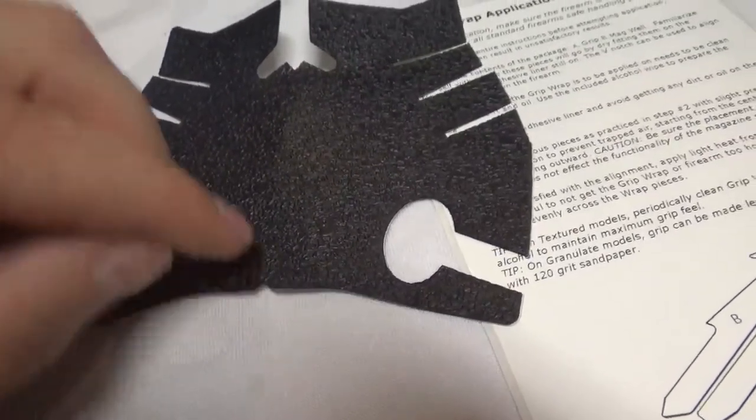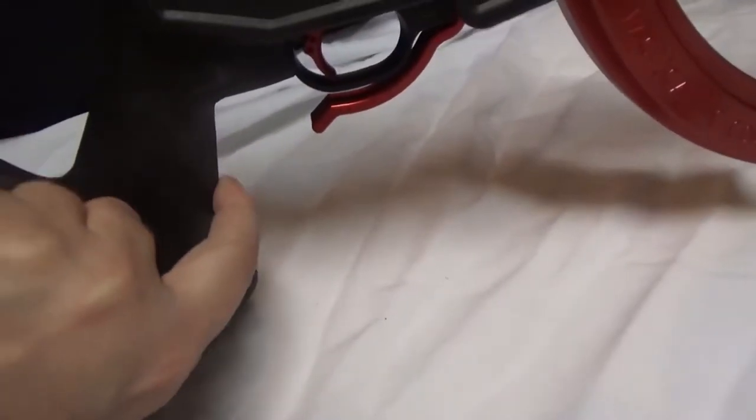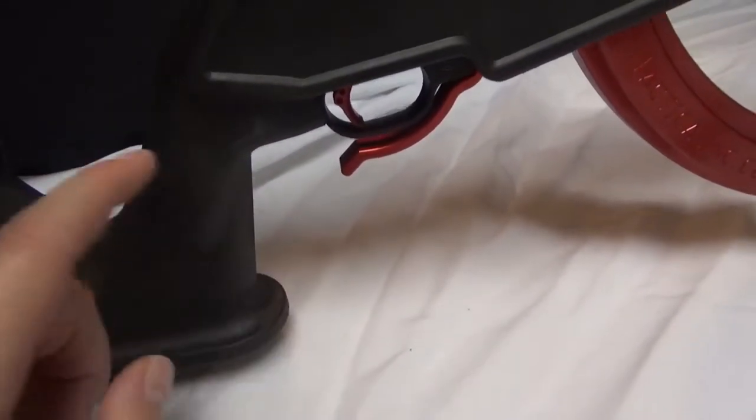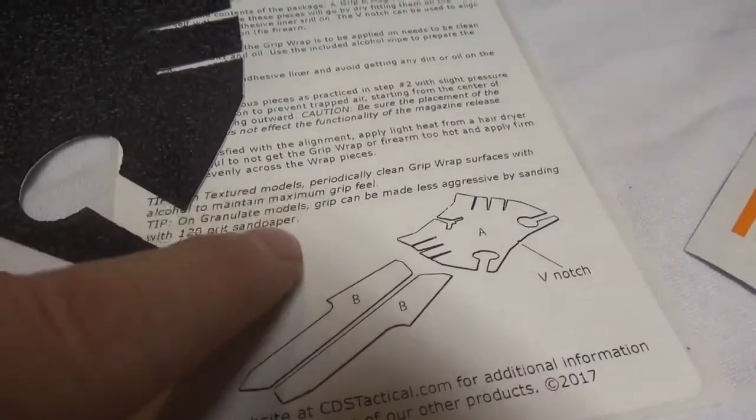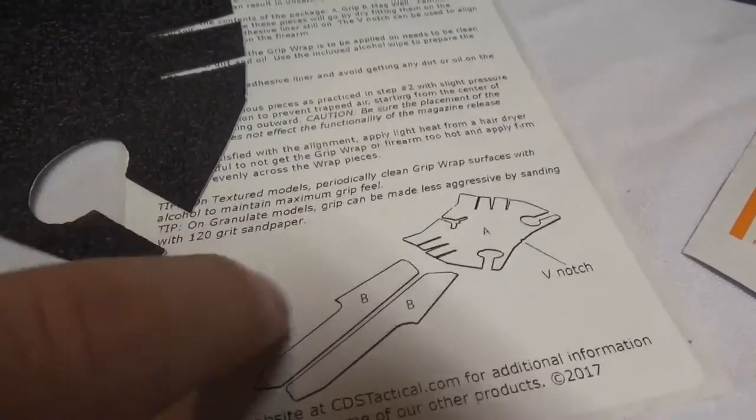Now they tell you to line up this V-notch here with the crease of the rifle. So that's going to be that crease right here, not the crease right here. Now on the instructions, they might for characters like me, they might want to put a little picture of the actual stock and point to the underbelly, because that's where you have to get everything lined up.